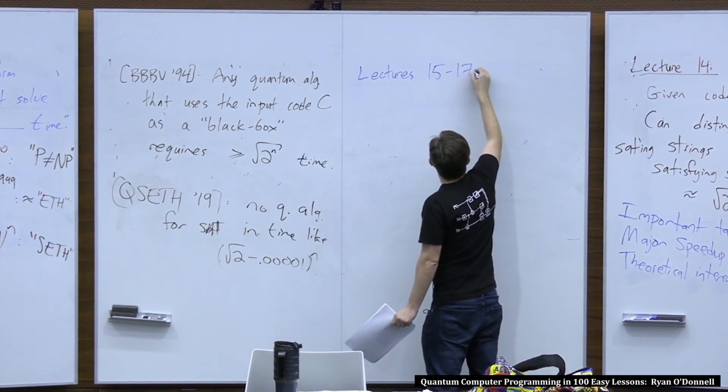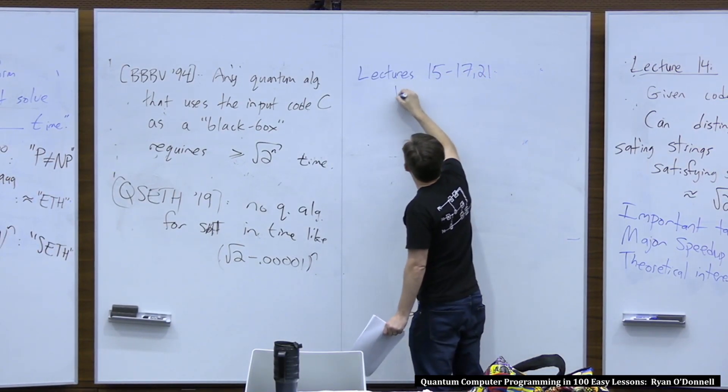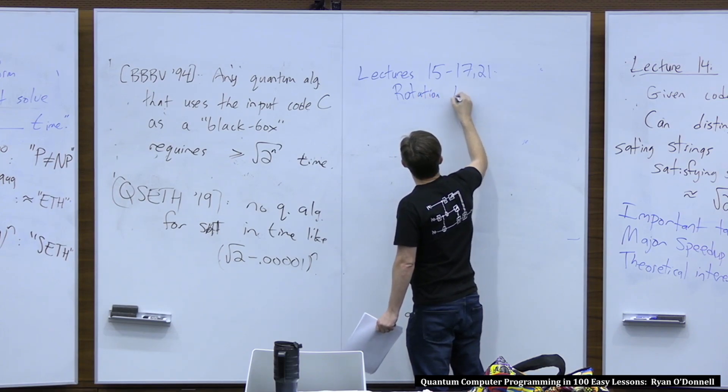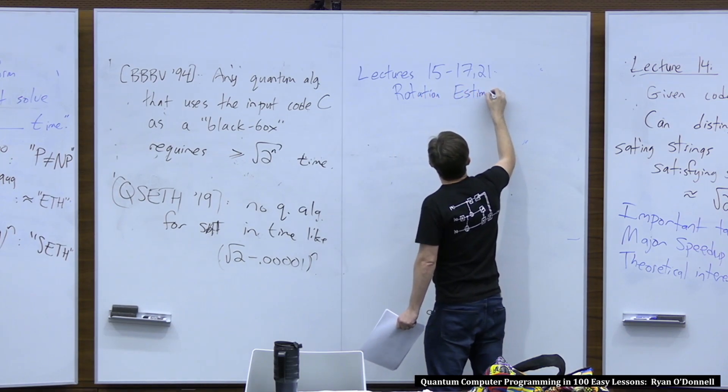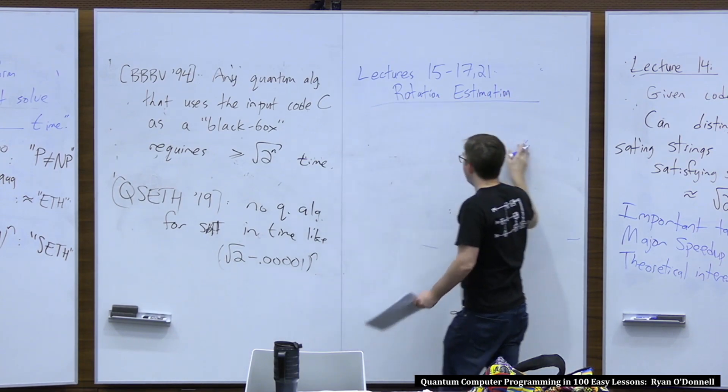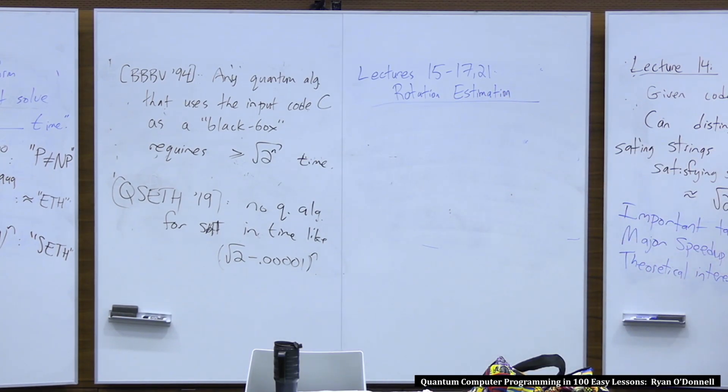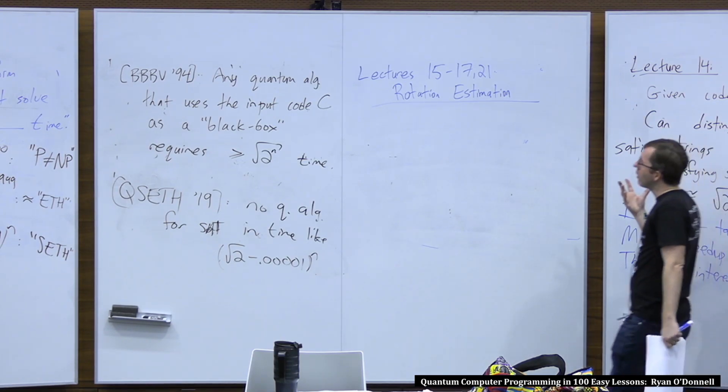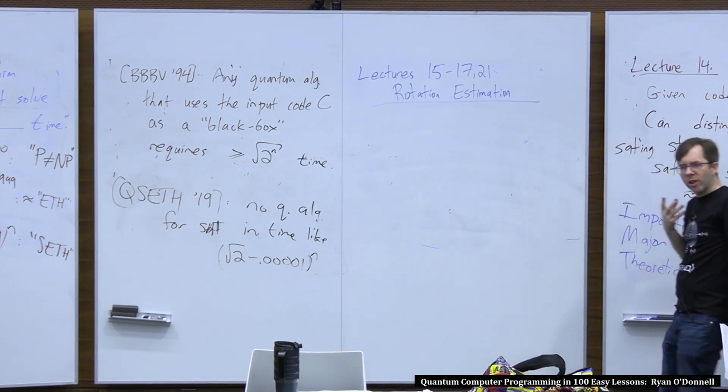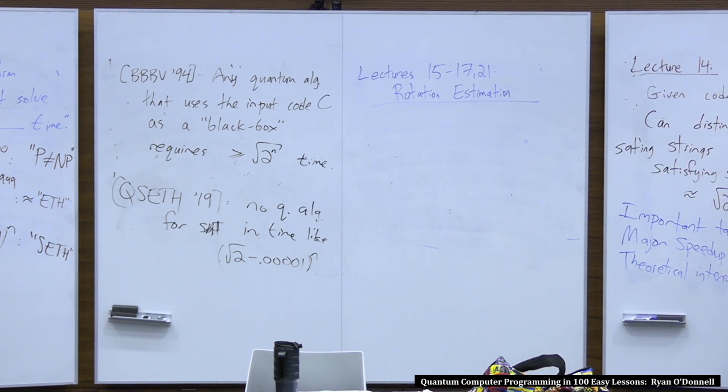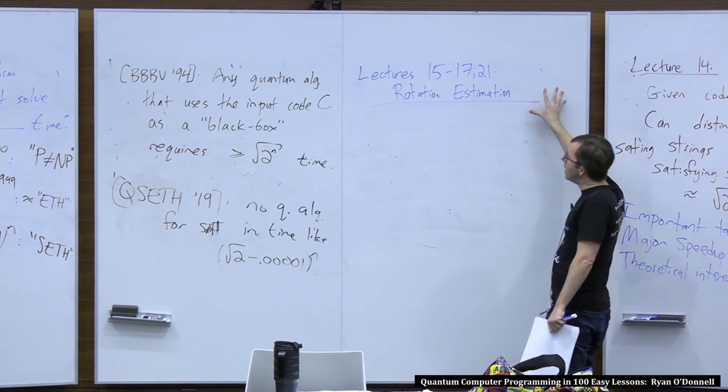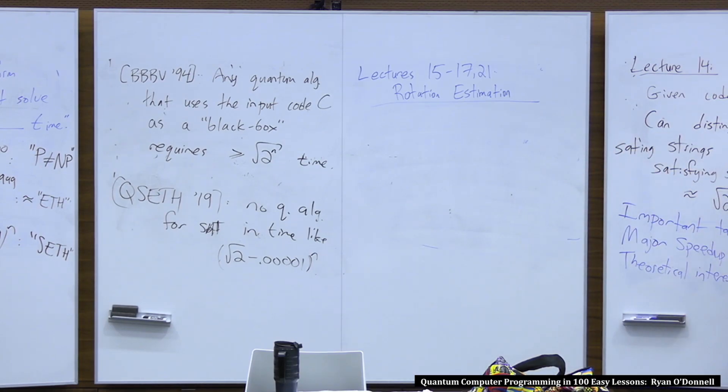So we studied rotation estimation a lot in subsequent lectures. And this is like maybe the most powerful sort of subroutine, or maybe even paradigm in quantum computing. Unlike the Hadamard Transform, it's sort of like the one algorithm where you can try to at least think about how could I productively use this to solve problems? People are still thinking about what can we use this rotation estimation subroutine to maybe do?